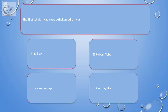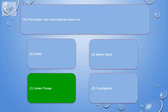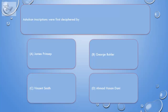Question: The first scholar who read Ashokan edicts was: A. Buhler, B. Robert Sebel, C. James Princep, D. Cordrigatan. Correct answer is C. James Princep.